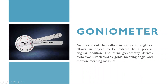The next one is the goniometer. A goniometer is an instrument that either measures an angle or allows an object to be rotated to a precise angular position. The term goniometer derives from two Greek words: gonia, meaning angle, and metron, meaning measure.